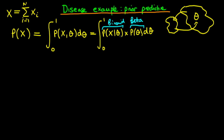A beta prior can represent a range of different beliefs about the probability theta of an individual having the disease in the population. Before deriving the specific distribution mathematically, I want to talk about some of the intuition. The beta distribution is described by two parameters, a and b, and by varying these parameters we can get a range of different beliefs, which we would expect to be reflected in our prior predictive distribution.